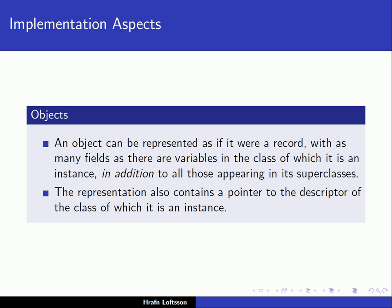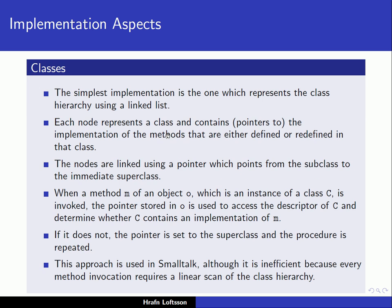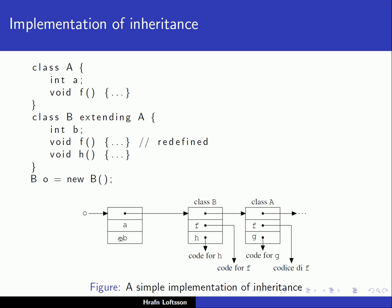Remember we mentioned earlier that an object can be represented as if it were a record with as many fields as there are variables in the class of which it is an instance, in addition to all those appearing in its superclasses. This representation also contains a pointer to the descriptor of the class. We have class A with an instance variable A, and class B which extends A — so B is a subclass of A with its own instance variable B, and B also inherits instance variable A from class A.